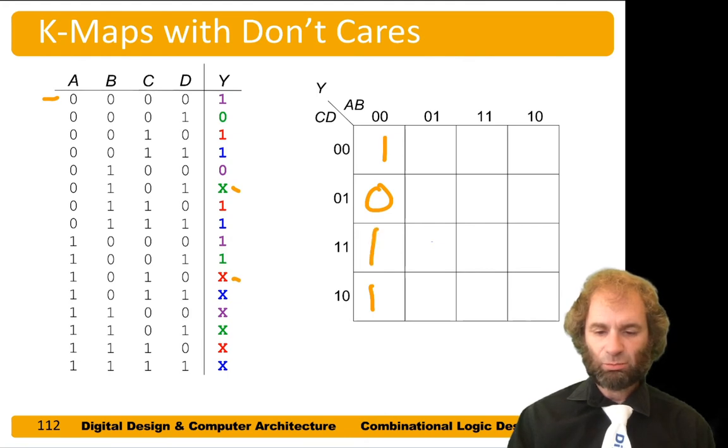Next, 0100... 00101 is an X. 0110 is an X. And all the remainders are X's.